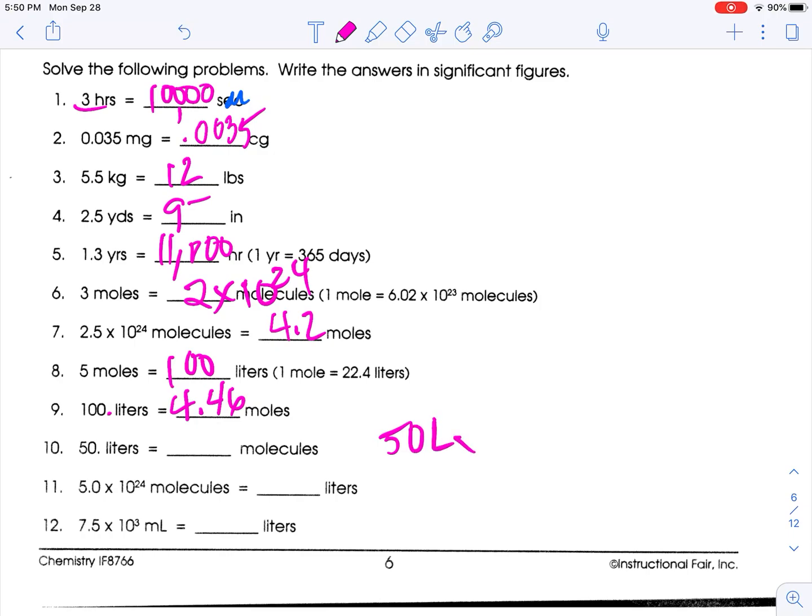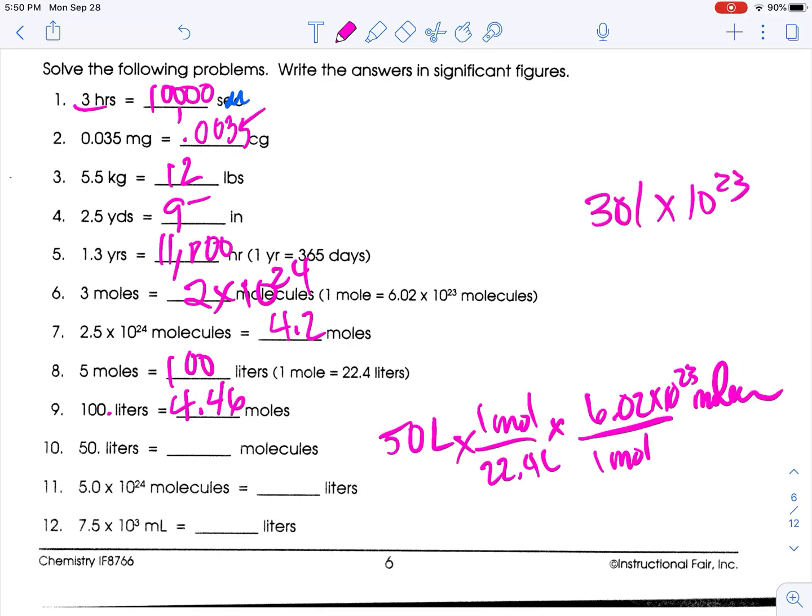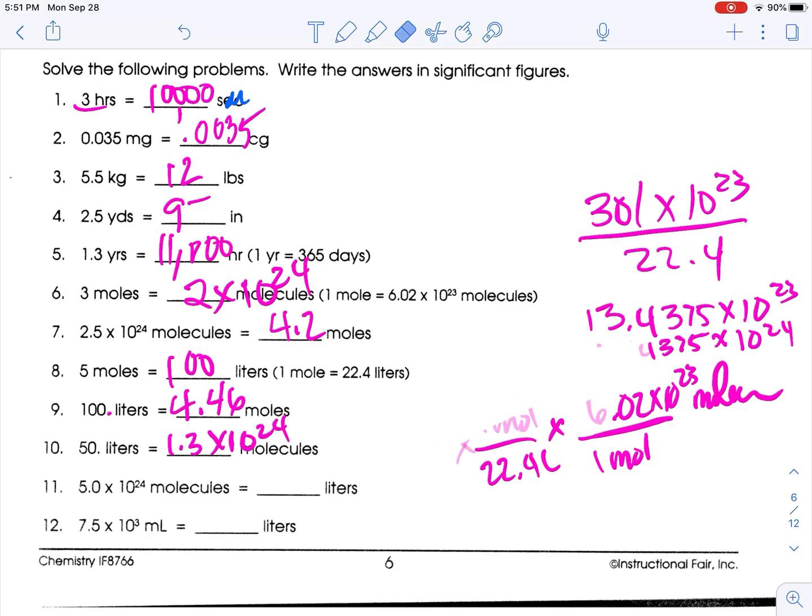Liters to molecules. So 50 liters - they already told me that 22.4 liters is 1 mole, and 1 mole is 6.02 times 10 to the 23rd molecules. 50 times 1 times 6.02 is 301 times 10 to the 23rd. Divide by 22.4: 301 divided by 22.4 is 13.4375 times 10 to the 23rd, which is 1.34375 times 10 to the 24th. I want two sig figs: 1.3 times 10 to the 24th. That's hard - we're going to talk about this later in the year.